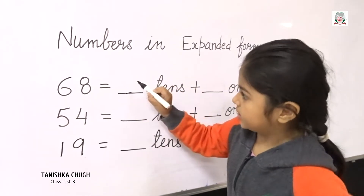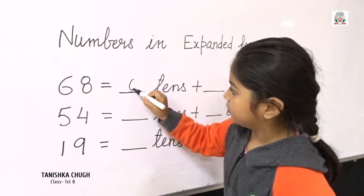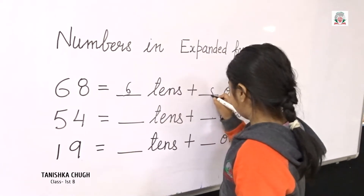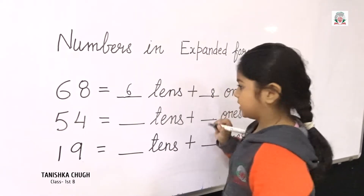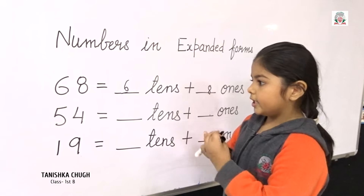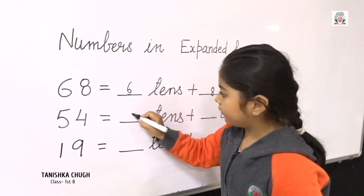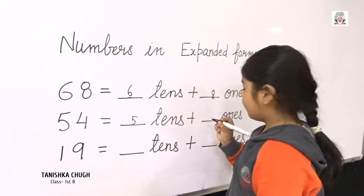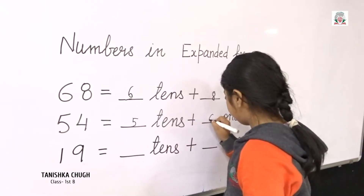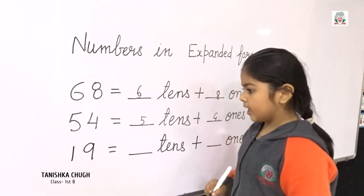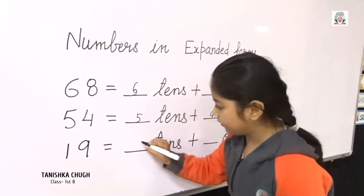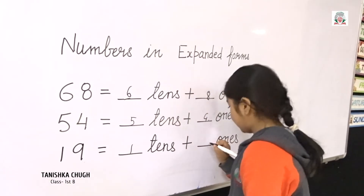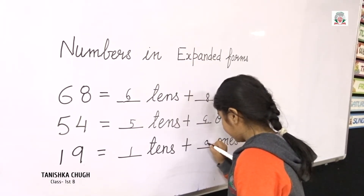68 is equal to 6 tens plus 8 ones. 54 is equal to 5 tens plus 4 ones. 19 is equal to 1 ten plus 9 ones.